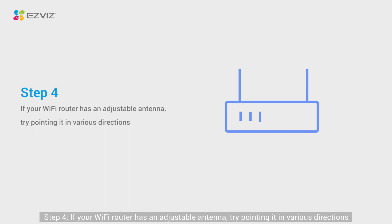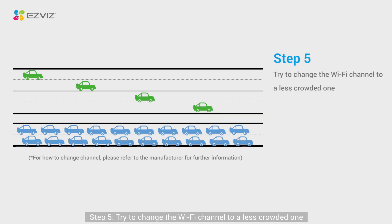Step 4: If your Wi-Fi router has an adjustable antenna, try pointing it in various directions. Step 5: Try to change the Wi-Fi channel to a less crowded one.